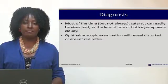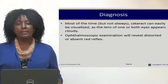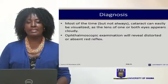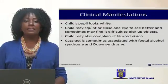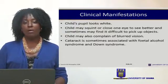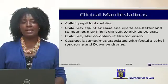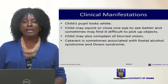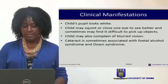For diagnosis, a cataract can often easily be visualized externally — looking at the person's face, the lens appears opaque or cloudy. Ophthalmic examination is conducted to determine the extent of this opacity. The child's pupil looks white and may show some squint, and they may complain of blurred vision. Cataracts are sometimes associated with Fetal Alcohol Syndrome and Down Syndrome, so it is important to assess for this in such children.